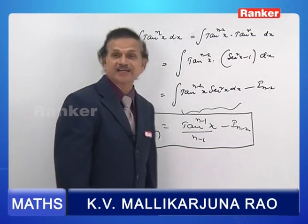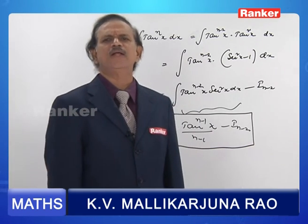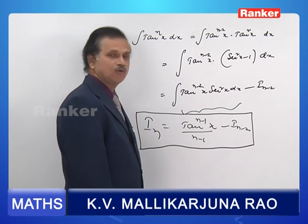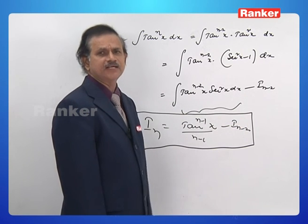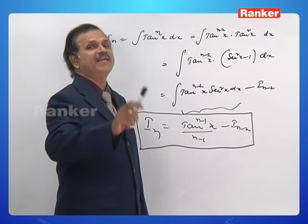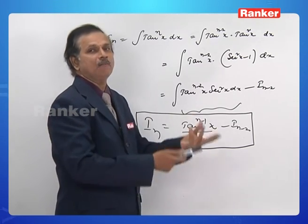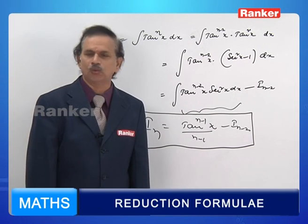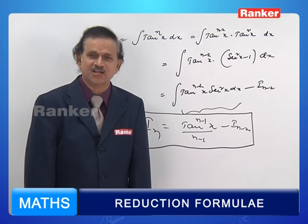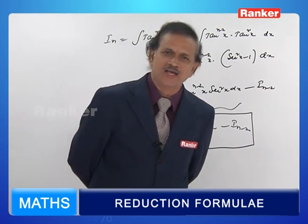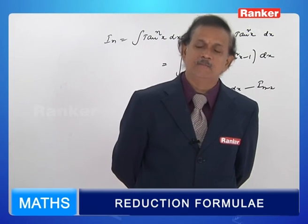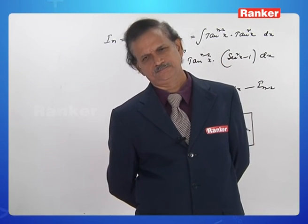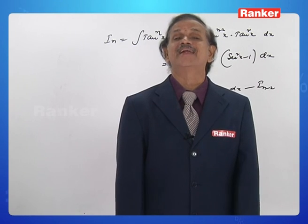For integral tan⁵x, put n equal to 5: tan⁴x/4 minus I₃, where I₃ is the integral of tan³x. For that, you apply the same formula again with n equal to 3. The very name indicates it is a reduction formula: to obtain integral tan⁵x, you reduce 5 step by step until you arrive at the answer. That is the very purpose of introducing a reduction formula.